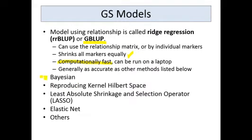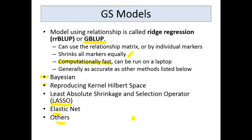Other methods include a Bayesian method, which does give higher weights to some loci considered important. In fact, some loci are even given a weight of zero and don't contribute to the prediction models. There's also the reproducing kernel Hilbert space method, the LASSO method, elastic net, and others.